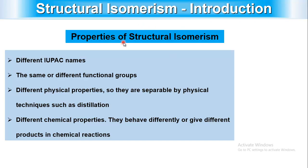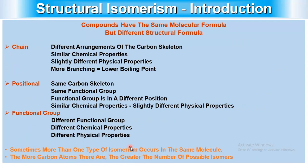Properties of structural isomers: they have different IUPAC names, same or different functional groups, different physical properties, and are separable by physical techniques such as distillation. They also have different chemical properties — they behave differently and give different products in chemical reactions. These compounds have the same molecular formula but different structural formulas.